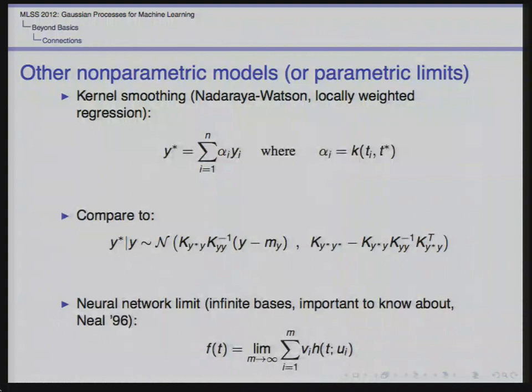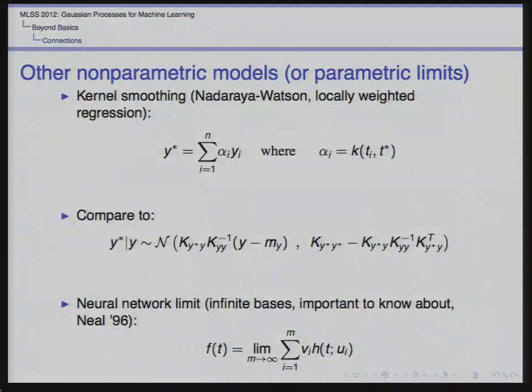It's also important to connect GPs to the neural network literature. GPs for machine learning grew partly out of looking at infinite limits of neural networks. In particular, Radford Neal wrote a cool paper in 1996: if you've got a neural network with a hidden layer and Gaussian-distributed noisy weights v_i, then as you take M to infinity, it converges to a GP with a specific kernel. You can actually calculate that neural network kernel, which is sometimes used in GP modeling.